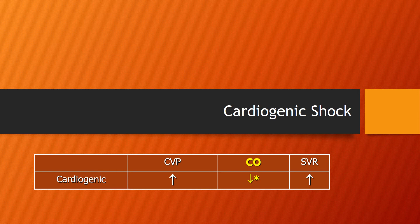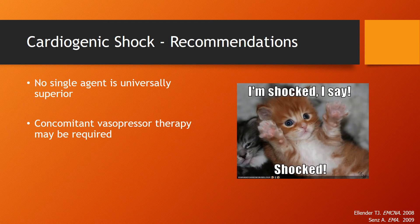Now discussing vasopressor agents in cardiogenic shock: the primary change is a decrease in cardiac output. There are no guidelines or recommendations specifying which vasopressor agent is preferred, as no single agent has been shown to be superior to another. You may also need to add a second vasopressor to be fully effective in cardiogenic shock.